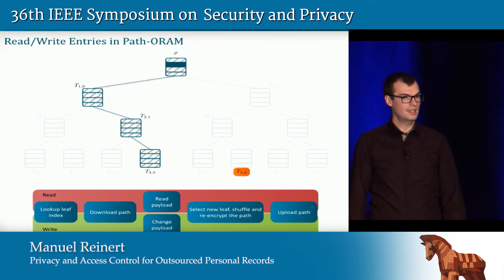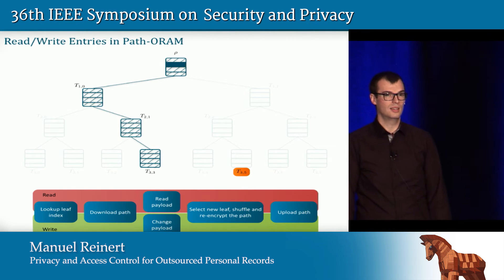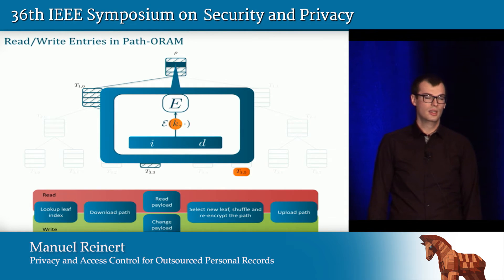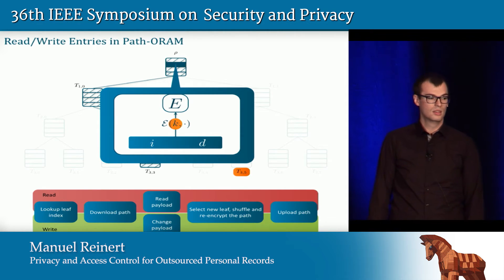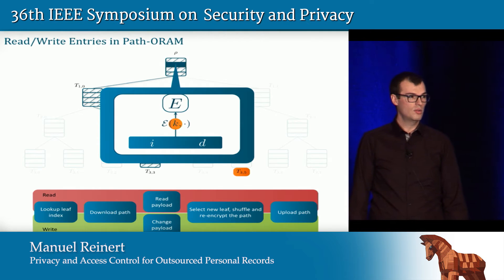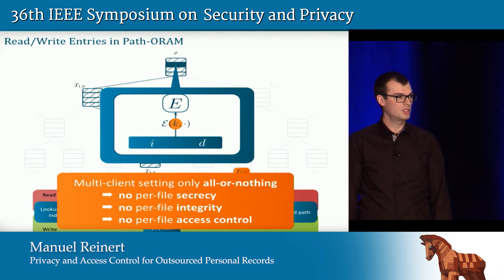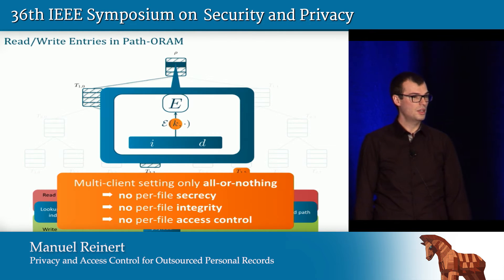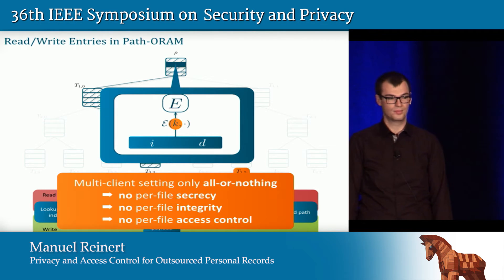This works nicely in the single-client setting. However, in the multi-client setting, we notice there is a single symmetric key K, and you can give access to other clients by handing over this key. Unfortunately, this is only possible in an all-or-nothing manner — meaning no per-file secrecy, integrity, or access control. Either you have access to everything or to nothing.